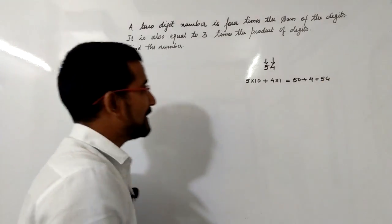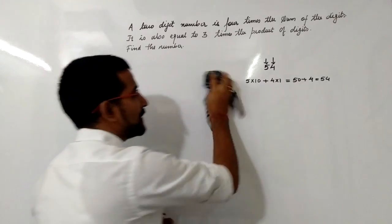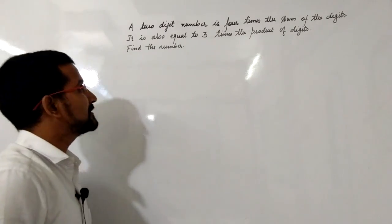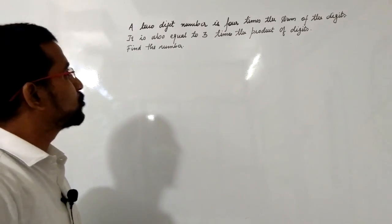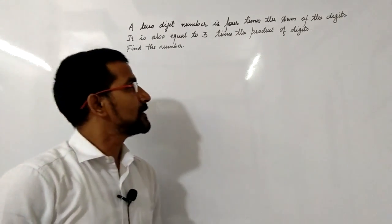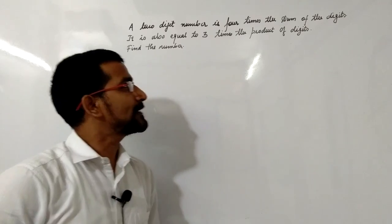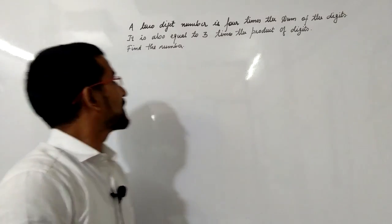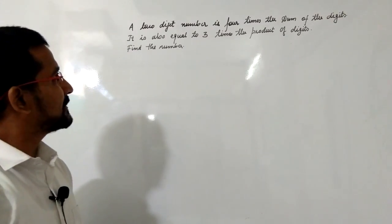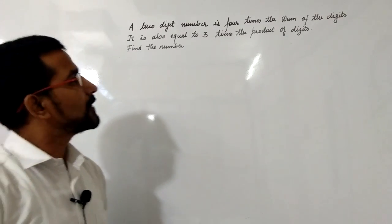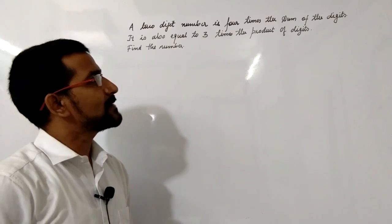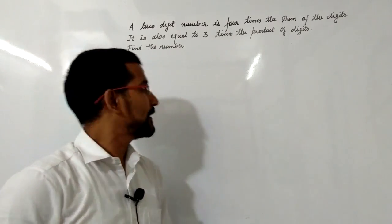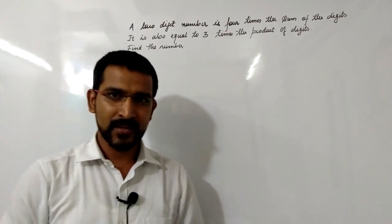We will take one example here. The given example is: a two-digit number is 4 times the sum of its digits. It is also equal to 3 times the product of its digits. Find the number.